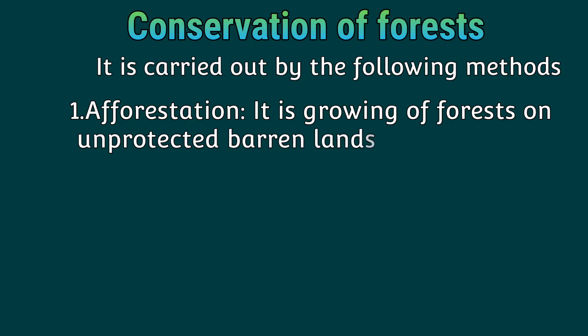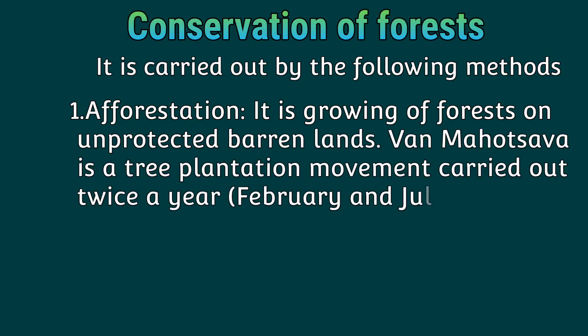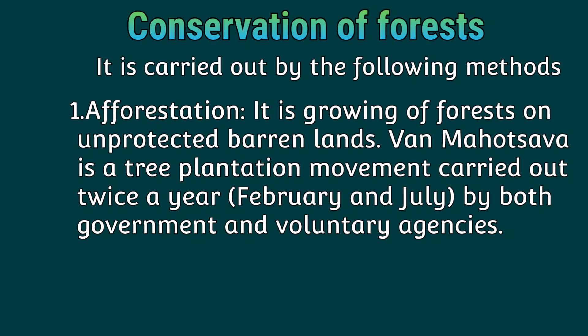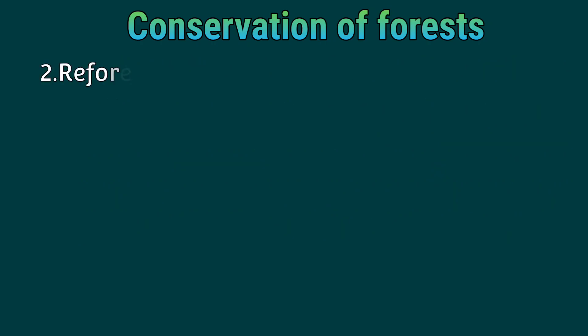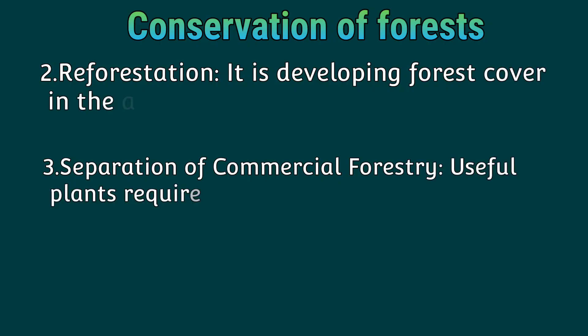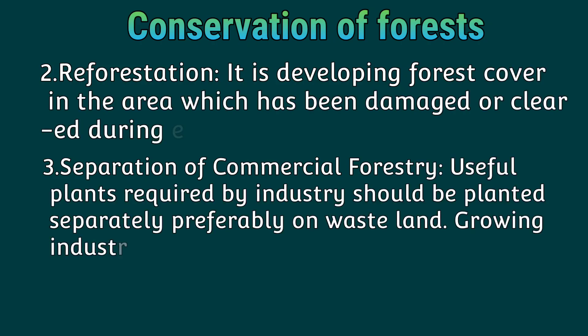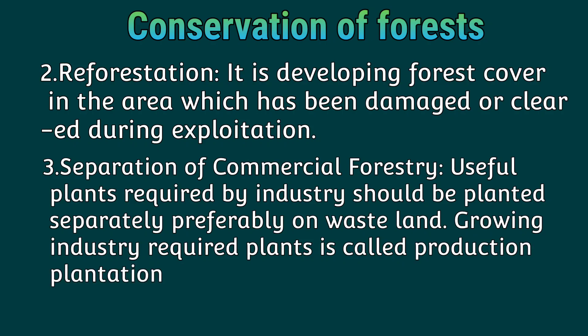Sustainable forest management is carried out by the following methods. First, afforestation: it is the growing of forests on unprotected barren lands. Van Mahotsav is a tree plantation movement carried out twice a year by both government and voluntary agencies. Reforestation: it is developing forest cover in areas which have been damaged or cleared during exploitation. Separation of commercial forestry: useful plants required by industry should be planted separately, preferably on waste land — this is called production plantation.